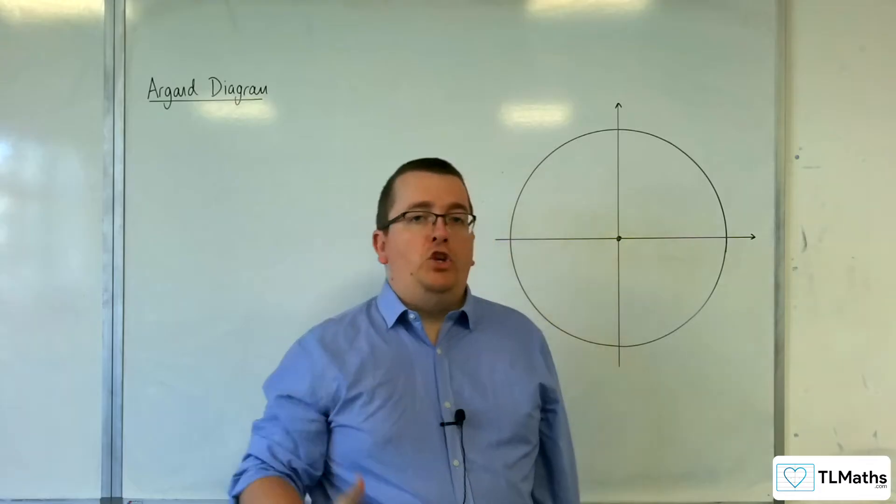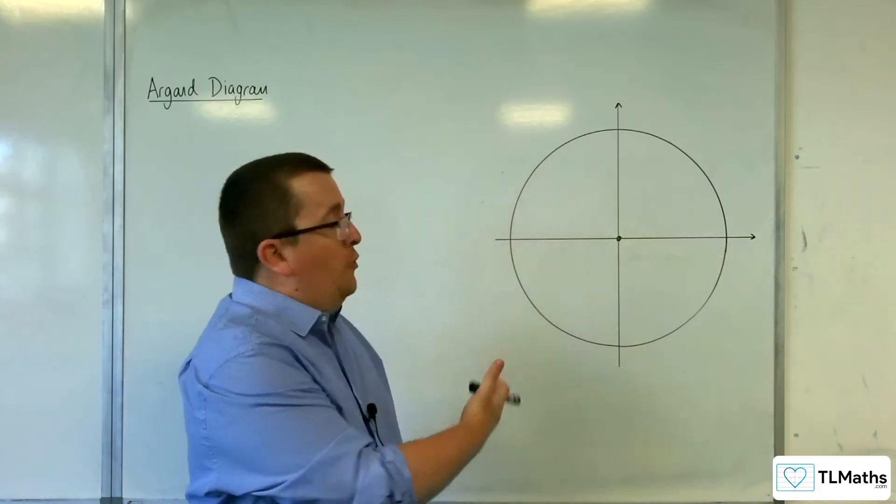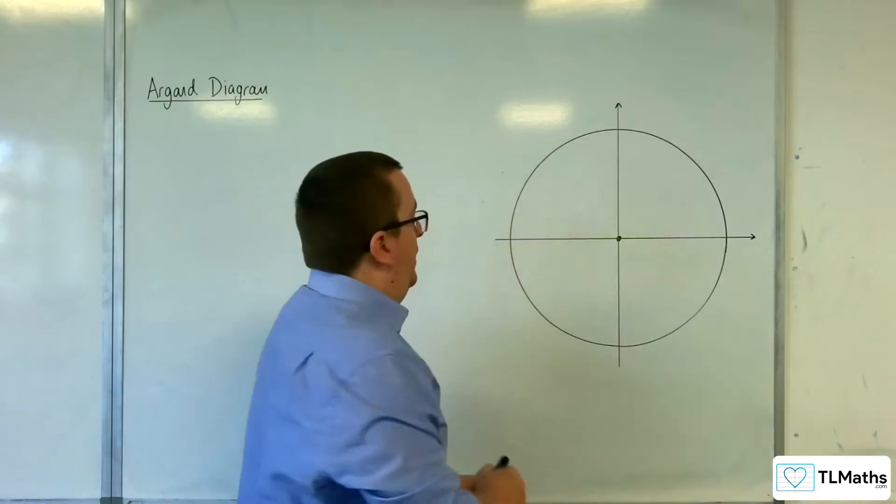So, you'll have met the equation of a circle in Cartesian form. Centre at the origin, x squared plus y squared equals r squared, right?